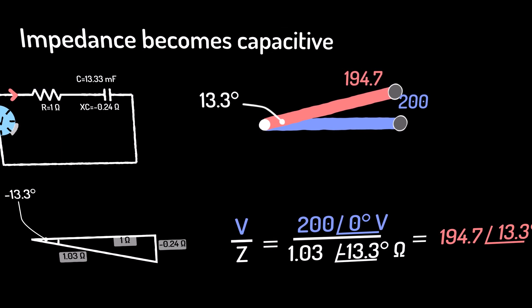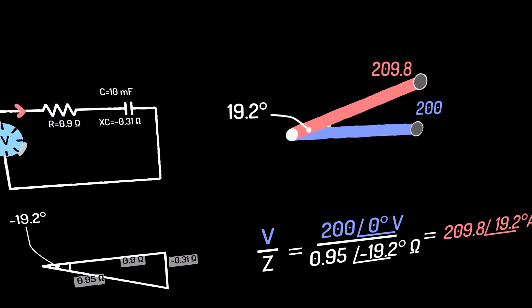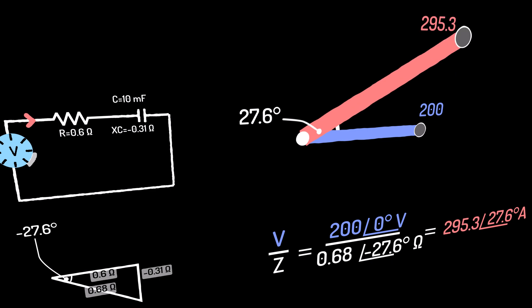Note that the reactance in a net-capacitive impedance is negative, because the reactance is negative. And this means the current will begin to have a positive angle in relation to the voltage.